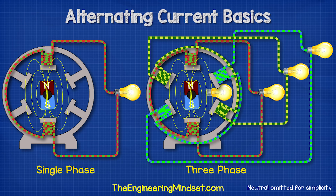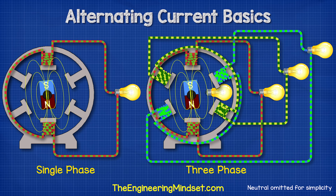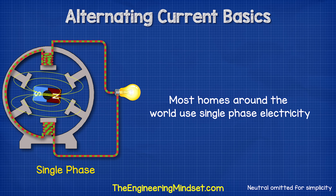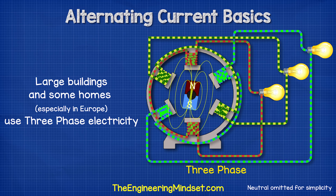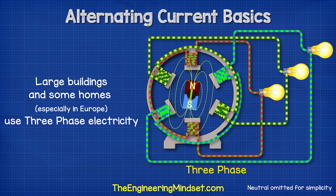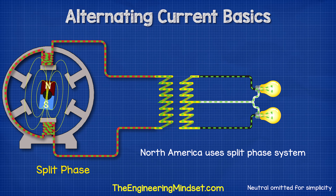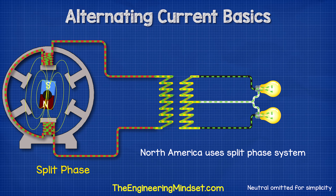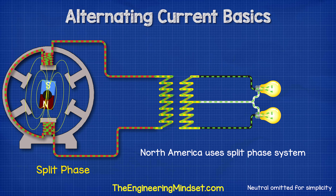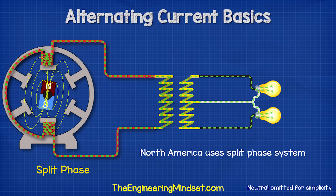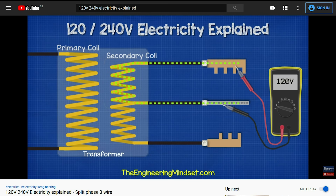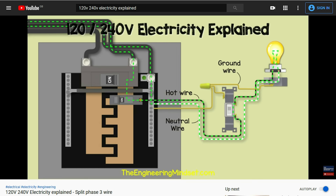We also have single phase as well as three phase AC electricity. Most homes around the world use single phase electricity. Large commercial buildings as well as some homes, especially in Europe, will use three phase electricity. Homes in North America use split phase electricity, where a center tap transformer splits a single phase into two, which provides two hot wires and a neutral. We've covered how split phase electricity works in detail in our previous video — do check that out, links down below.